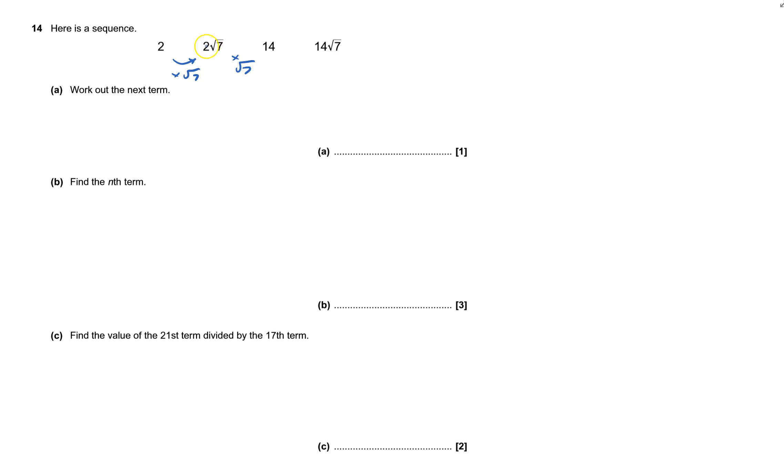2 times 7 is 14, and now I times that by root 7. So finally, to find the next thing, I need to times that by root 7, and that will give me 14 times by root 7.